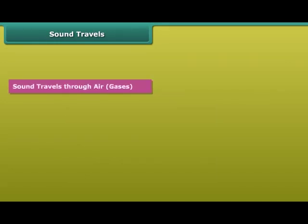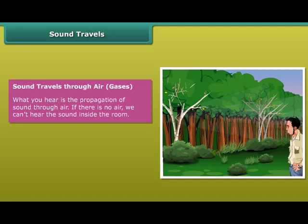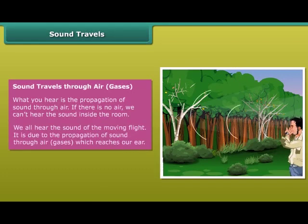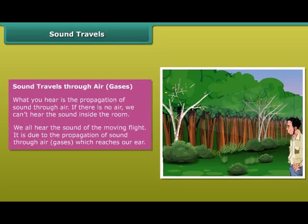Sound travels through air and gases. What you hear is the propagation of sound through air. If there is no air, we cannot hear sound inside the room. We all hear the sound of a moving flight — it is due to the propagation of sound through air and gases, which reaches our ear.